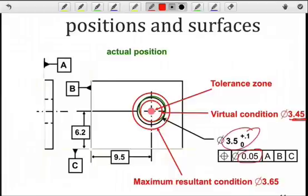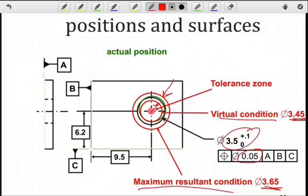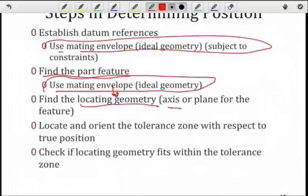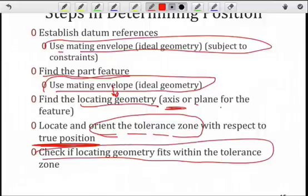The steps in determining the position of the actual feature are: first, establish the datum features in terms of our references. Use the mating envelope if I have a feature of size subject to constraints. Find the part feature using the mating envelope with no constraints. Find the locating geometry — for instance, an axis or plane — derived directly from that mating envelope. Then position and orient the tolerance zone with respect to true position from the basic dimensions in the design spec. Finally, check if that locating geometry fits within the tolerance zone over the entire length of the feature.